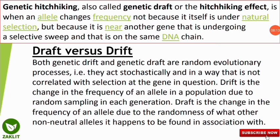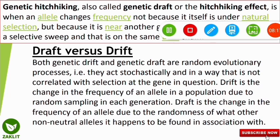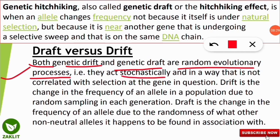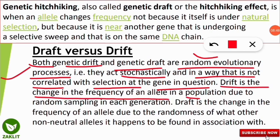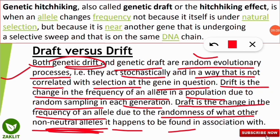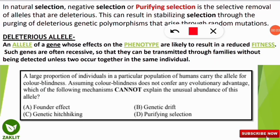Both genetic drift and genetic draft are random evolutionary processes — they act stochastically and are not correlated with selection at the gene in question. Drift is the change in allele frequency due to random sampling each generation. Draft is the change in allele frequency due to the randomness of what other non-neutral allele it happens to be linked with. Drift involves a single allele; draft involves change due to nearby non-neutral alleles.